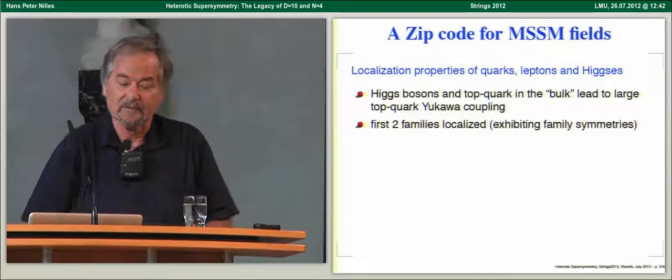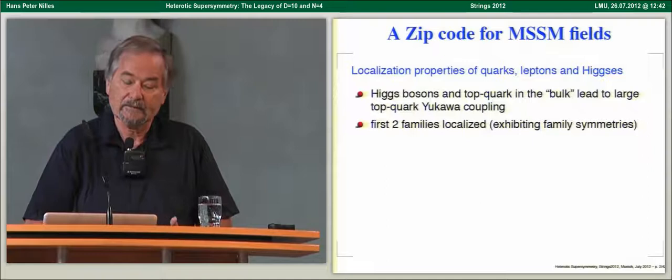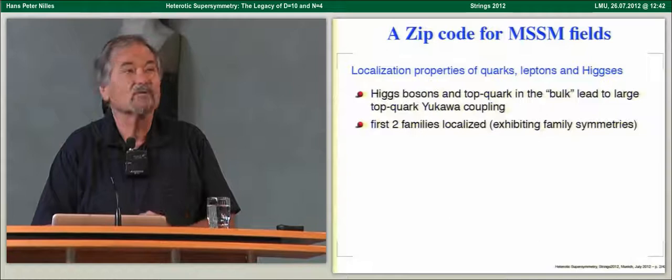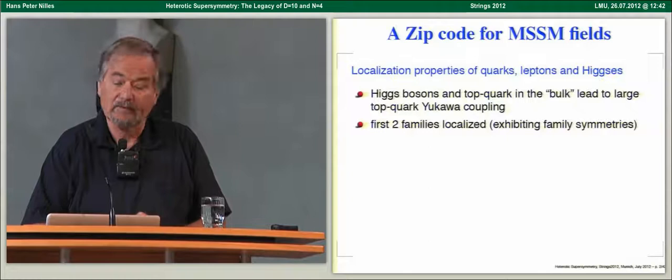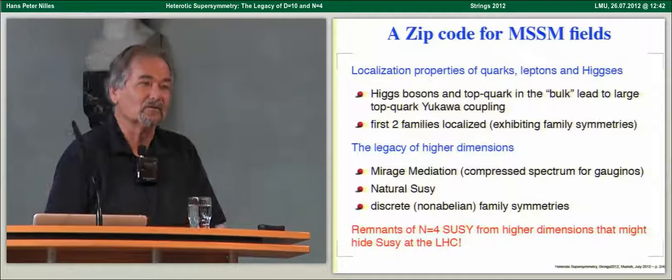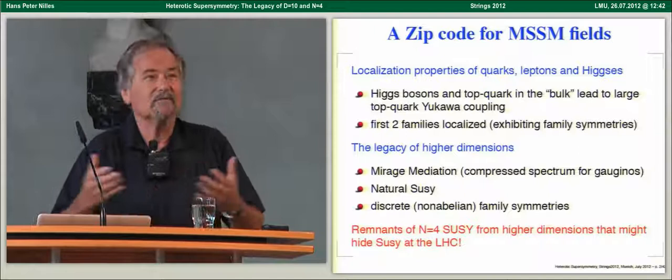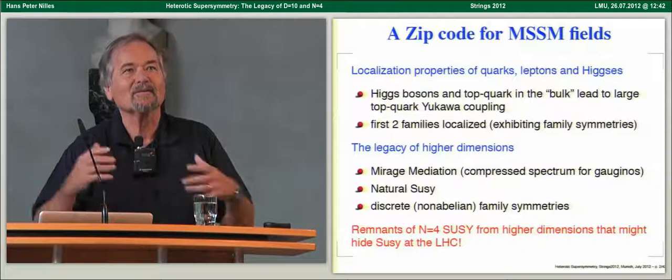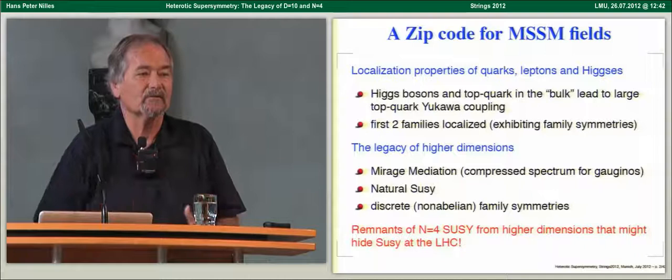What we actually found in these successful MSSM models was that the Higgs bosons always lived in the bulk, in the full extra dimensions. The same is true for the top quark, because of the large top quark Yukawa couplings. The first two families are localized at fixed points in the extra dimensions. Given that the Higgs bosons live in the bulk, they feel the full ten-dimensional theory, including remnants of N=4 supersymmetry that you would have from a torus compactification.